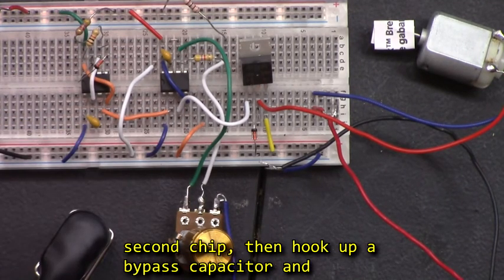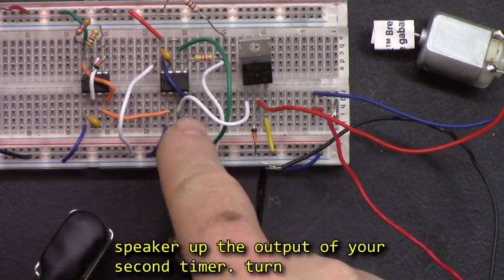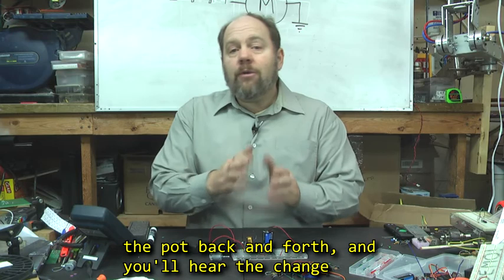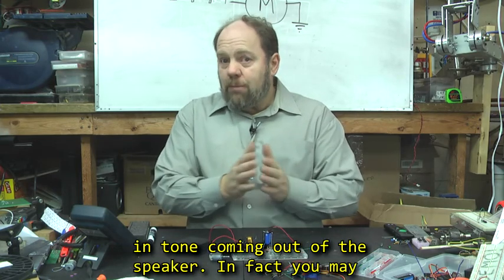Then hook up a bypass capacitor and speaker to the output of your second timer. Turn the pot back and forth, and you'll hear the change in tone coming out of the speaker.